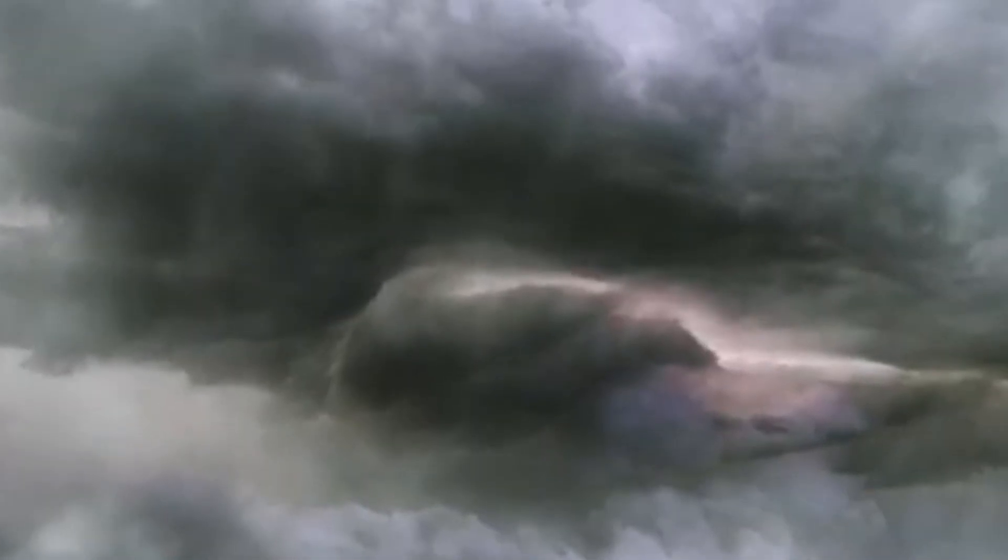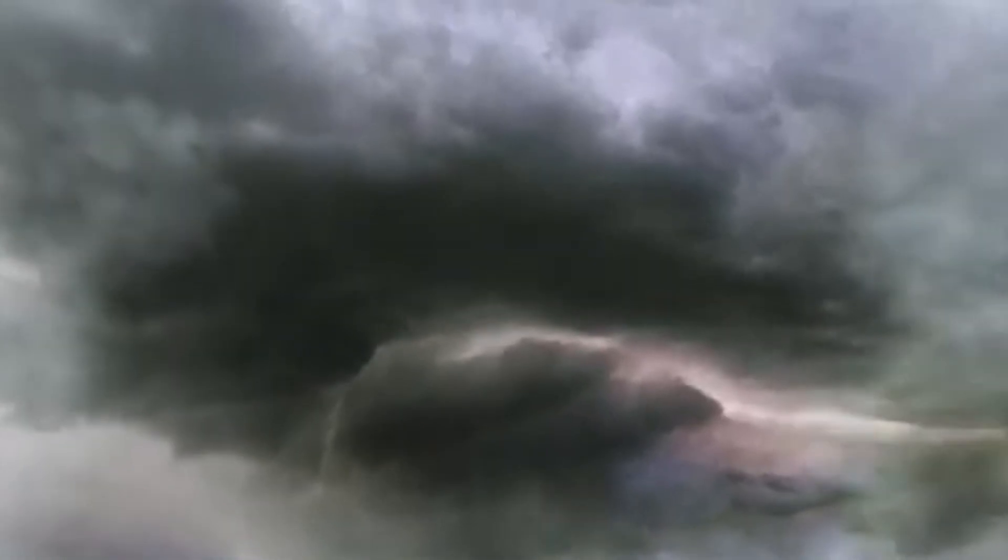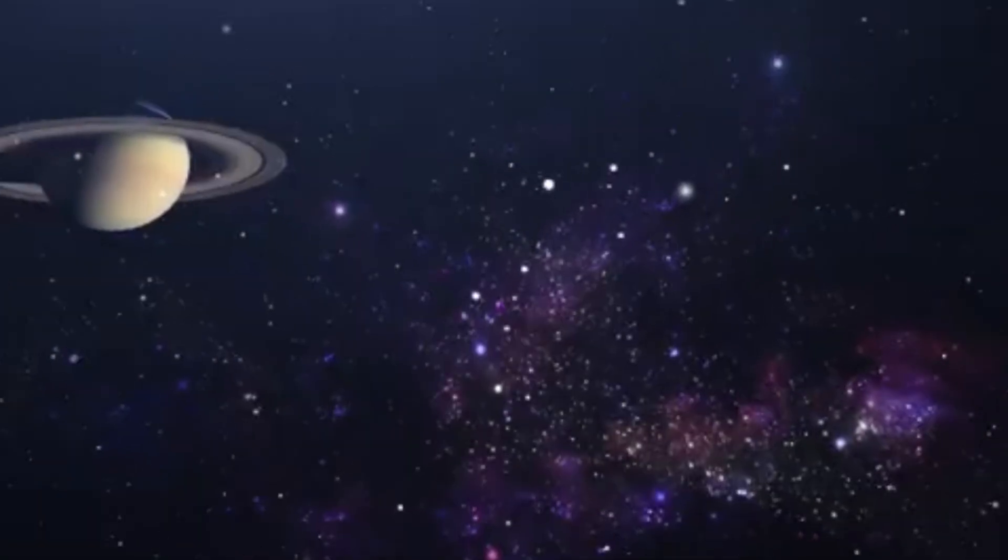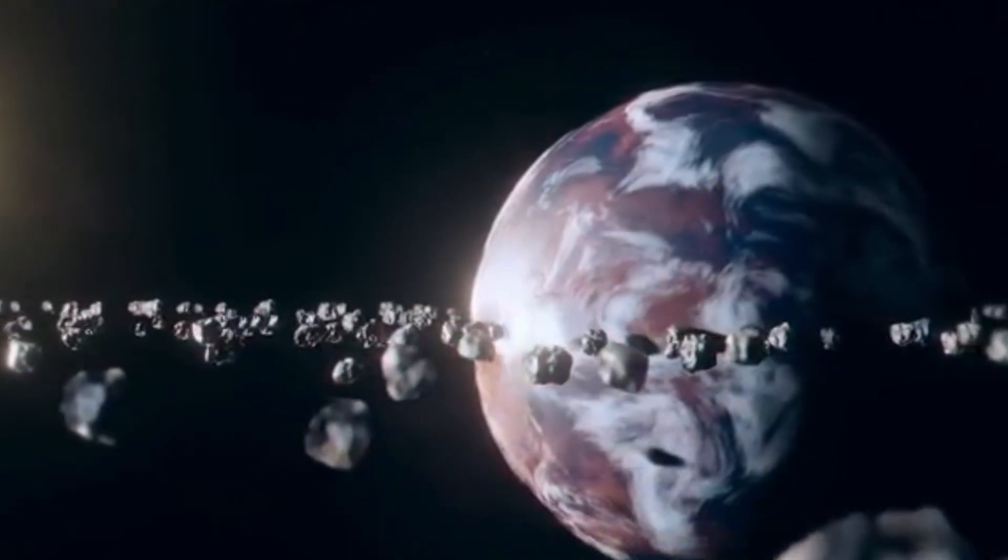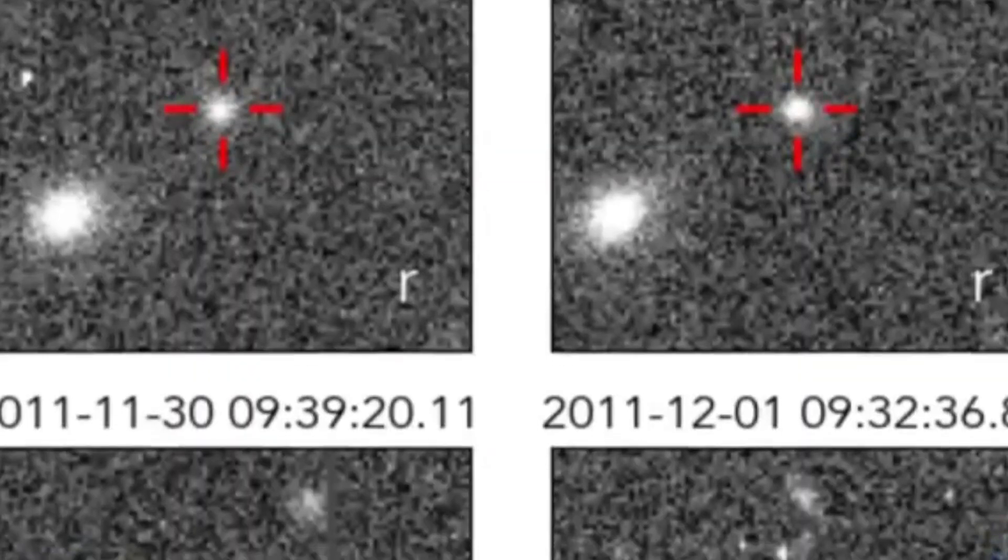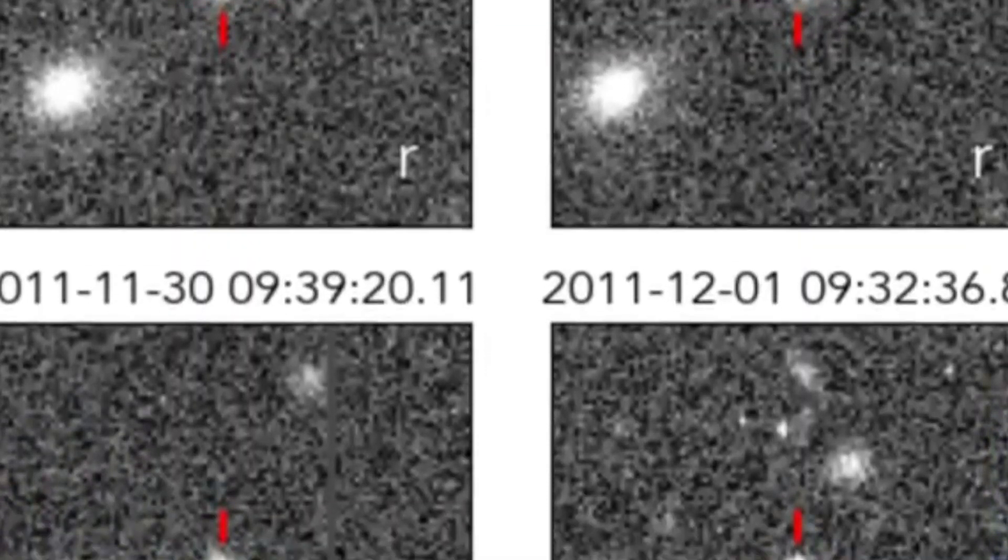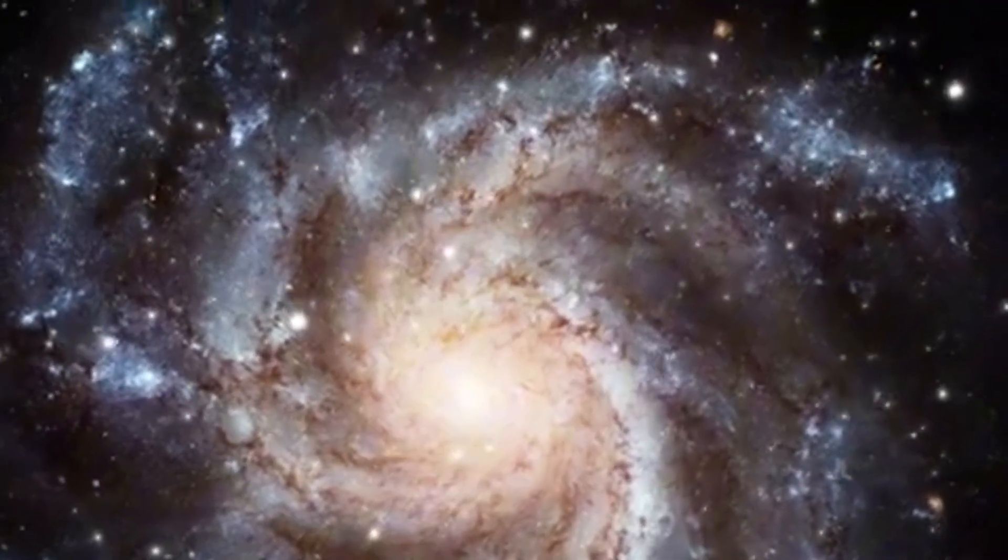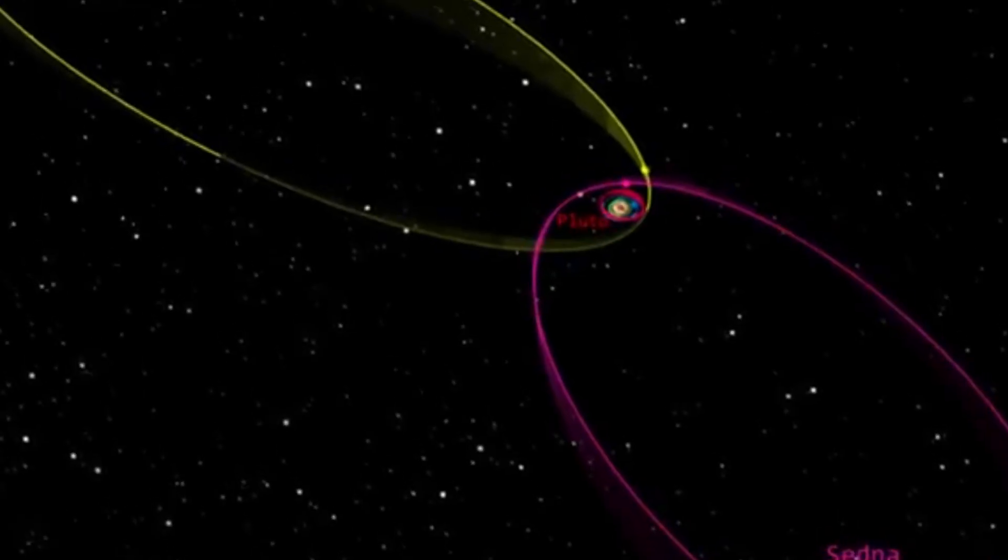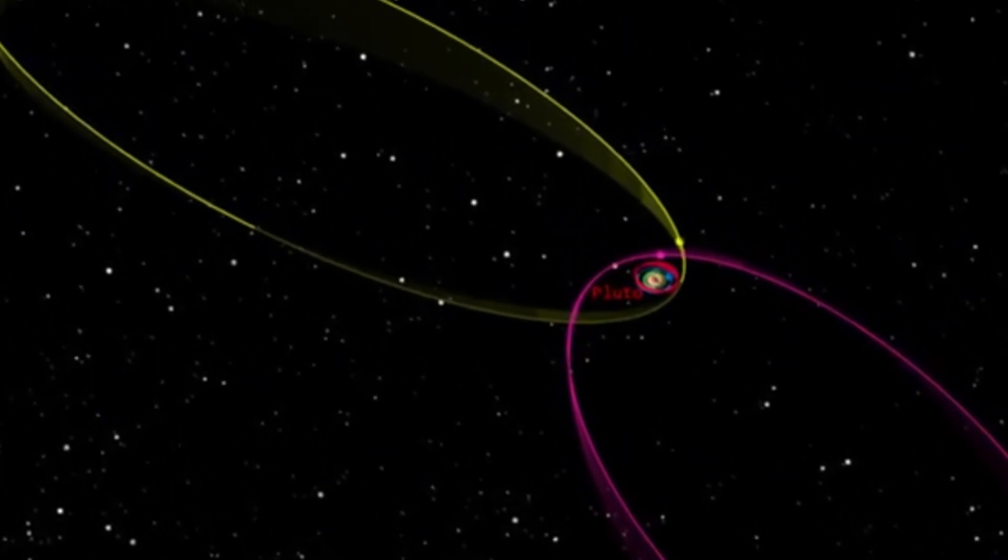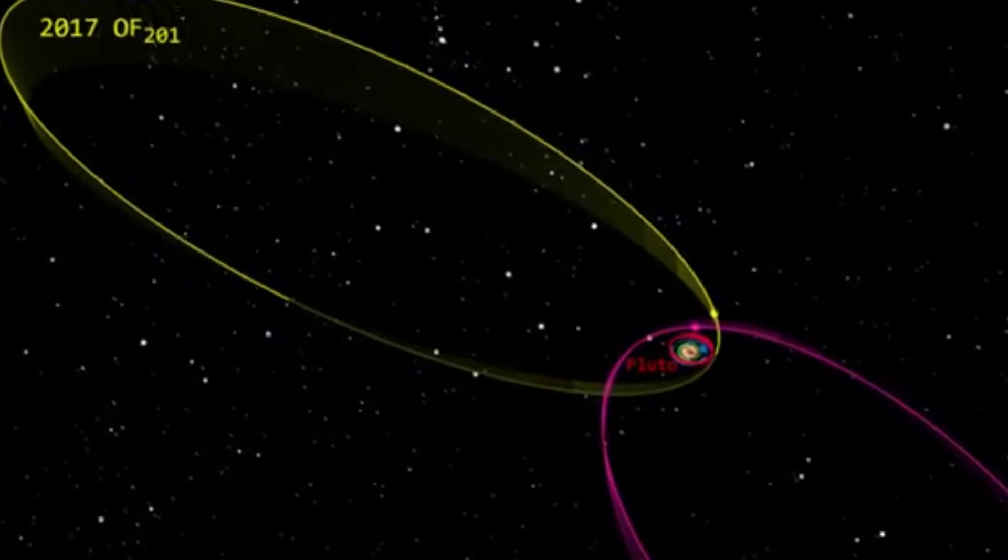This ultimately resulted in a sky map that narrowed down the planetary search area more precisely than ever before. If the hypothetical planet is similar to Neptune and weighs a good six Earth masses, its orbit would have a semi-major axis of 380 astronomical units. Against this backdrop, it could oscillate between a point closest to the Sun at 300 astronomical units and a point furthest from the Sun at 450 astronomical units on its journey through space.